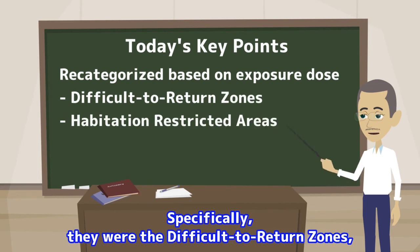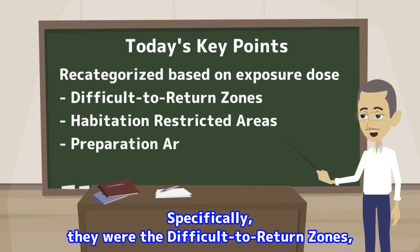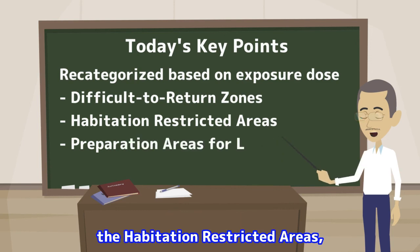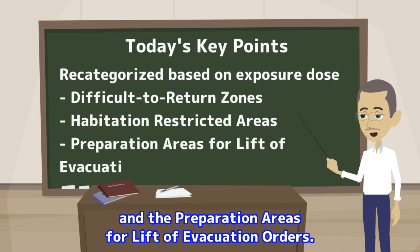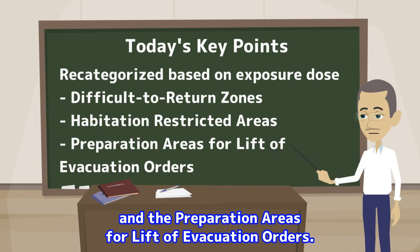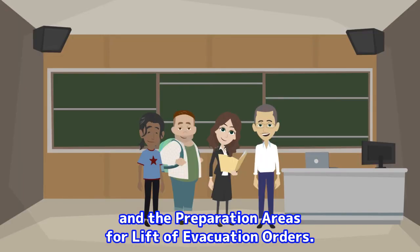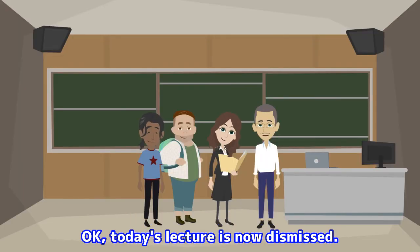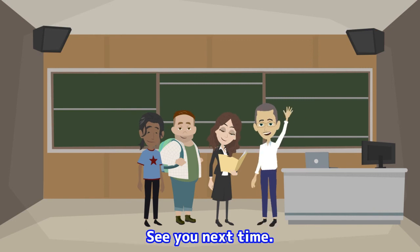Specifically, the new categories were the difficult-to-return zones, the habitation restricted areas, and the preparation areas for lift of evacuation orders. Today's lecture is now dismissed. See you next time.